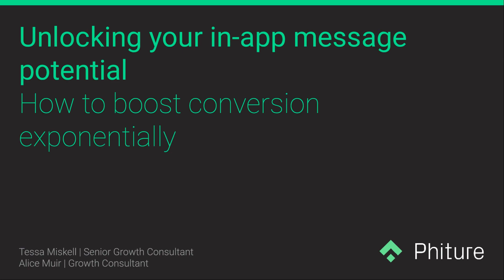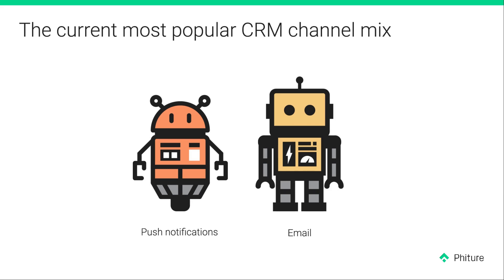We'll get started because we only have 30 minutes. This is the current situation we often see with our clients — across all industries, the most well-developed and understood CRM channels are push notifications and emails. Though we think these channels are super vital for a solid lifecycle marketing strategy, they do come with some drawbacks. We've created these different robot cartoons to represent the different channels: the email robot is more old school and classic, while the push notification robot is a little more dynamic but has only one wheel, showing its drawbacks.